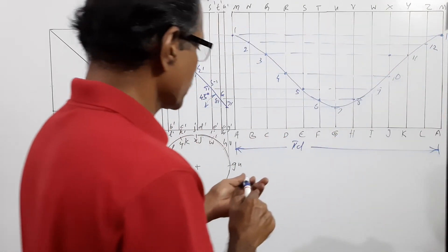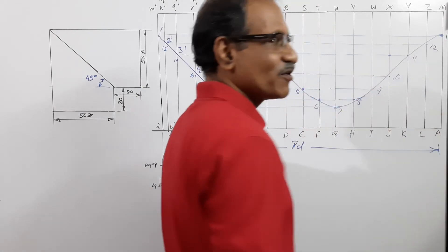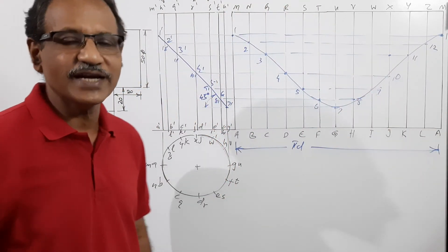Connect them by a smooth curve. You get a curve like this. It is a development of a cylinder cut by a cutting plane which is inclined at 45 degrees to HP.